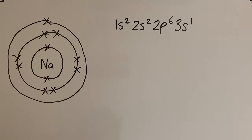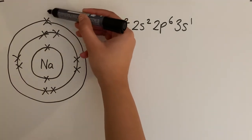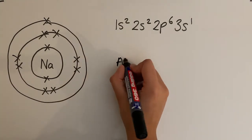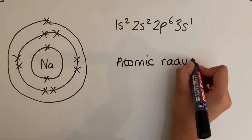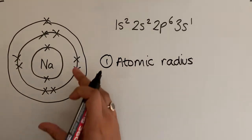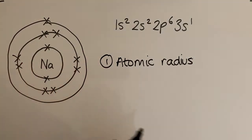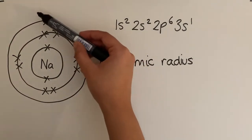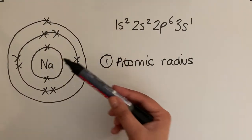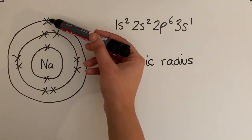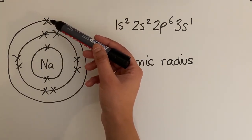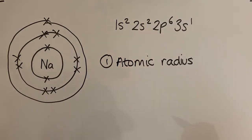The first factor is atomic radius. If we try to pull away an electron, the attraction between the nucleus and the outer electron matters. The nucleus has a nuclear attraction towards the electron. The stronger that attraction, the harder it will be to remove that electron; the weaker that attraction, the easier it will be.